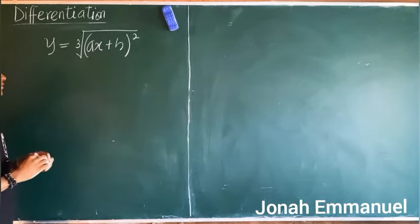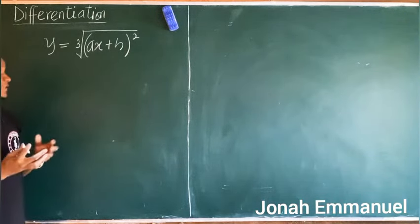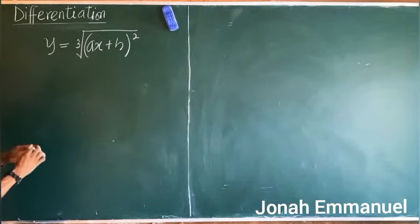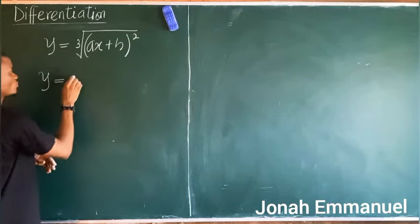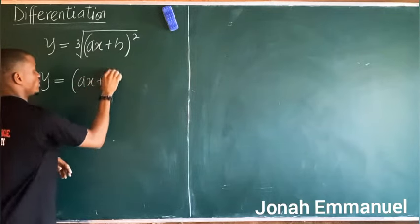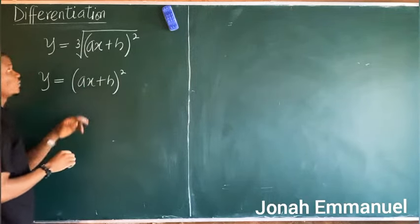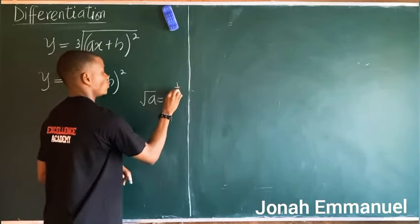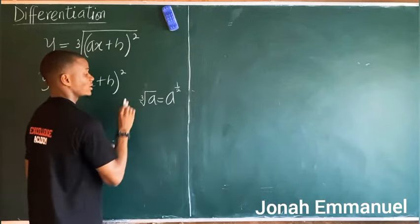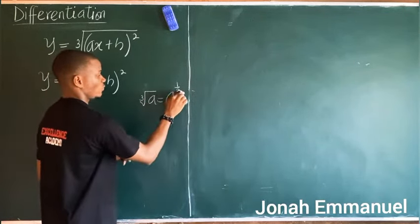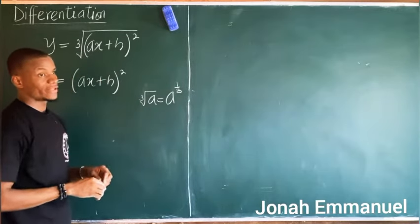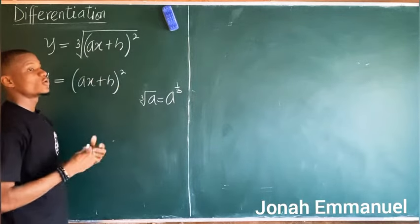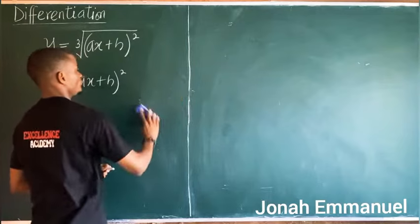To differentiate this, the first task is to express this in index form. We know that the square root of a equals a to the power one over two, and the cube root of a equals a to the power one over three.